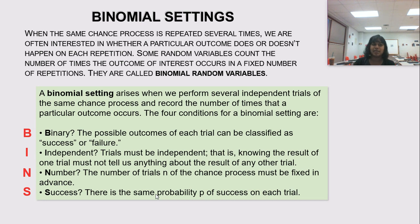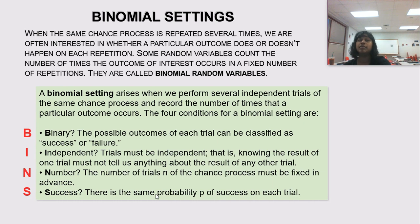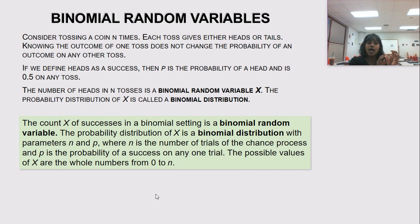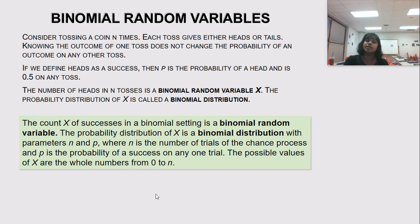If you are ever asked whether something is a binomial random variable, it must meet all four BINS categories: is it binary, is it independent, are your trials already numbered and fixed, and is the probability of success the same in each trial? Your binomial random variable is whatever variable — typically X — associated with that binary outcome. Your binomial distribution is the probability distribution of that variable.